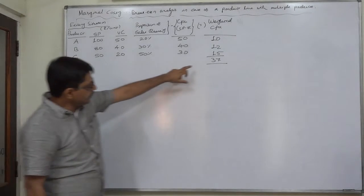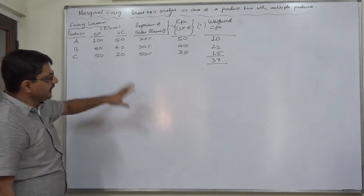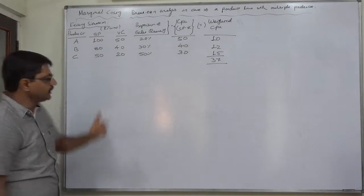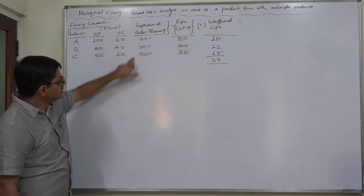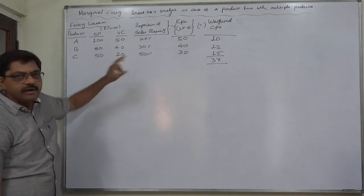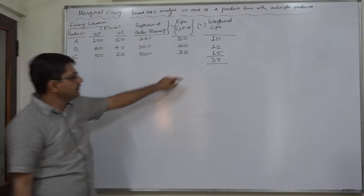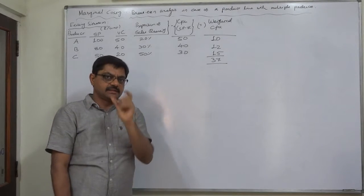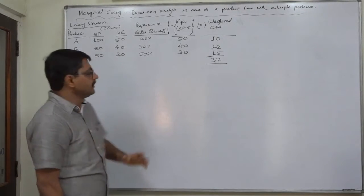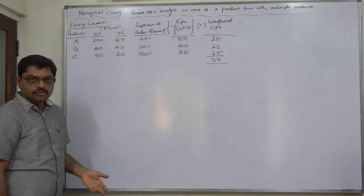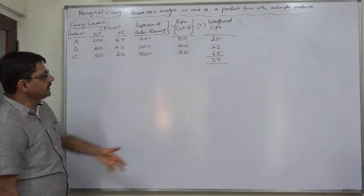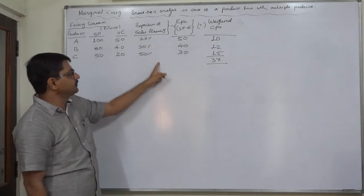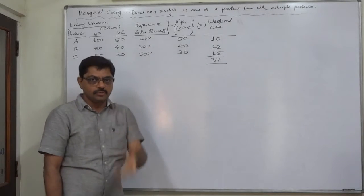The interpretation of Rs.37 is: if the company makes sales of 100 units of A, B, and C in this proportion, the average contribution per unit will be Rs.37. You can verify this by calculating the contribution per unit assuming sales of 100 units in this proportion — I leave that to you.